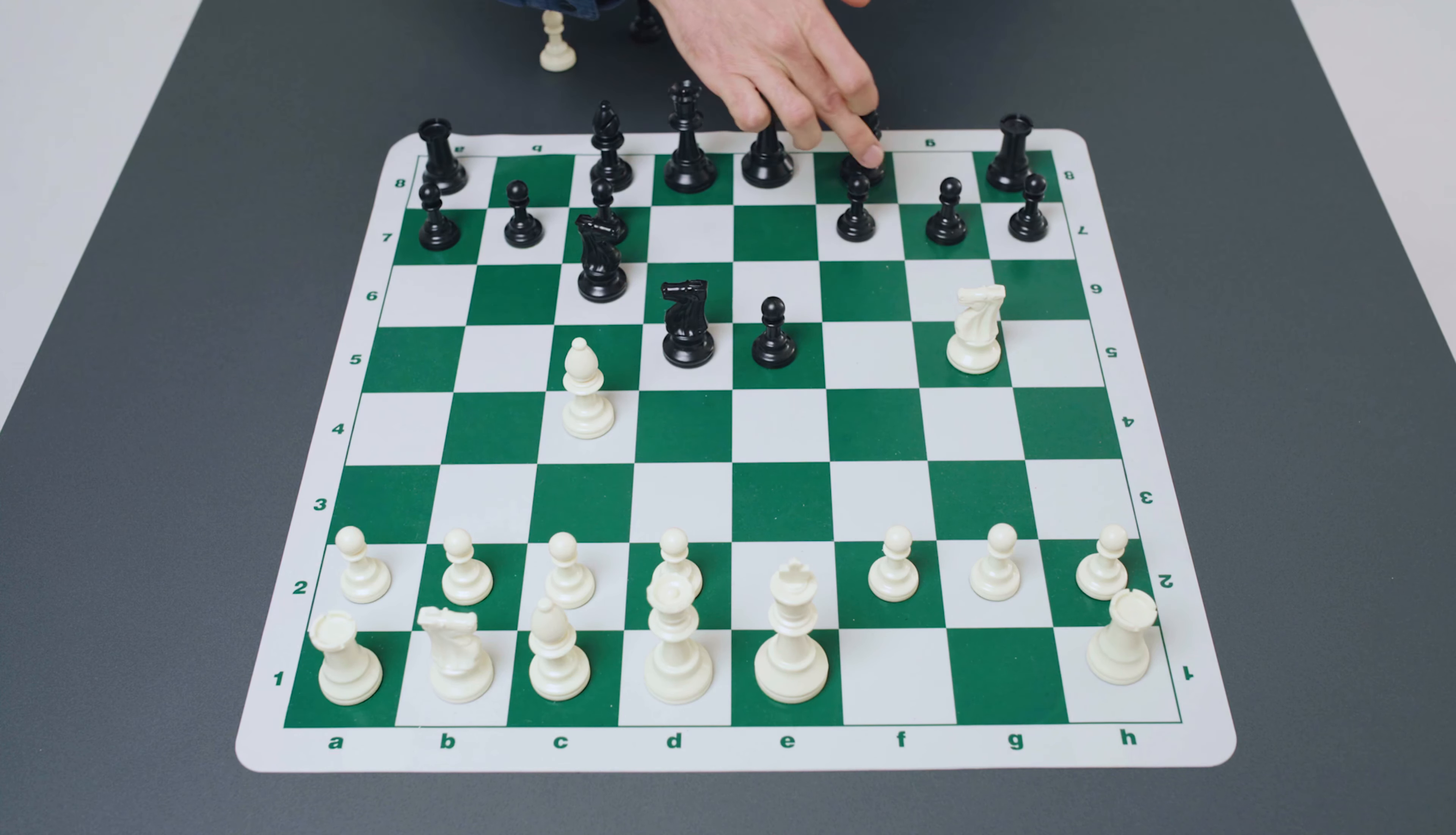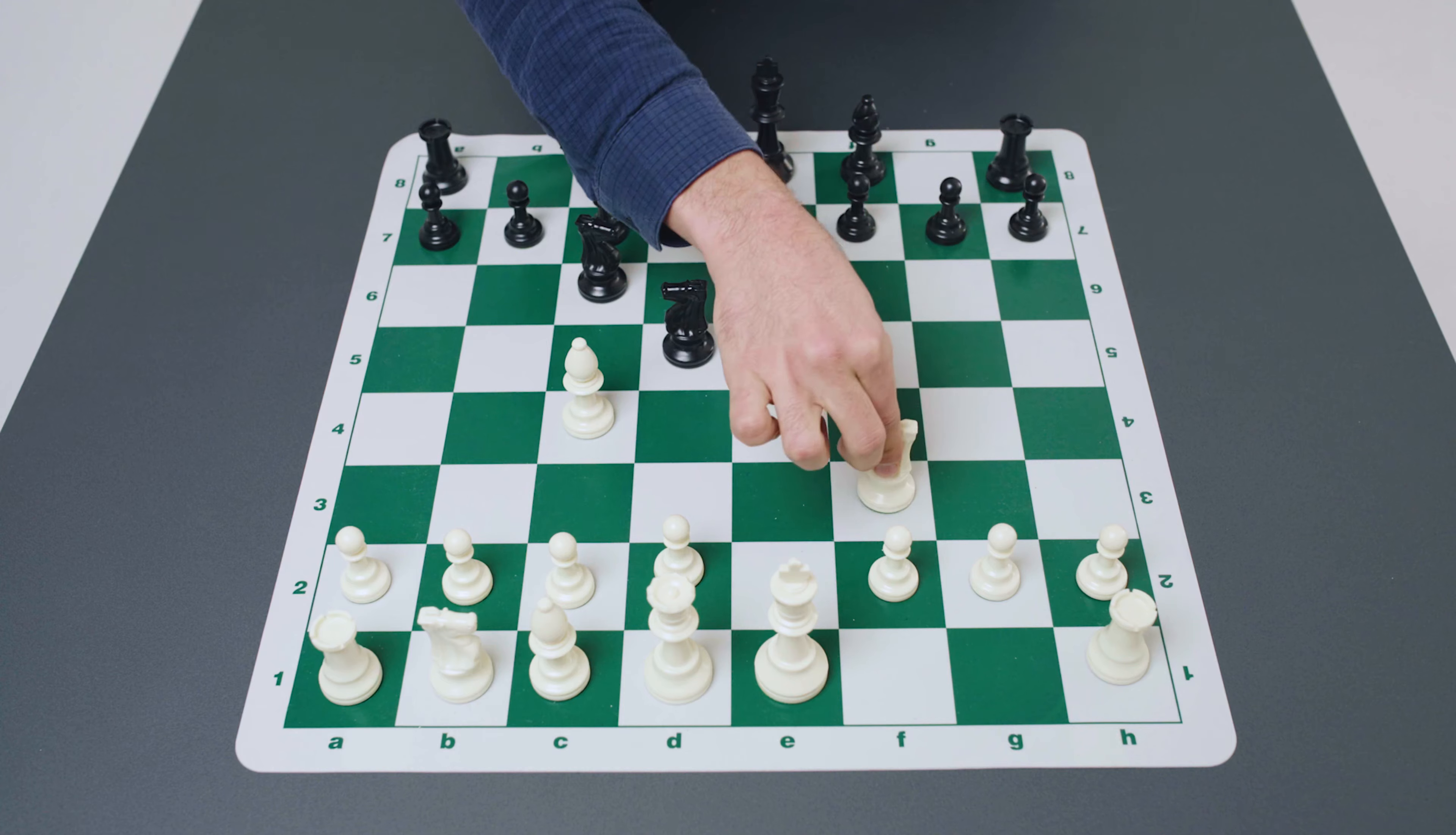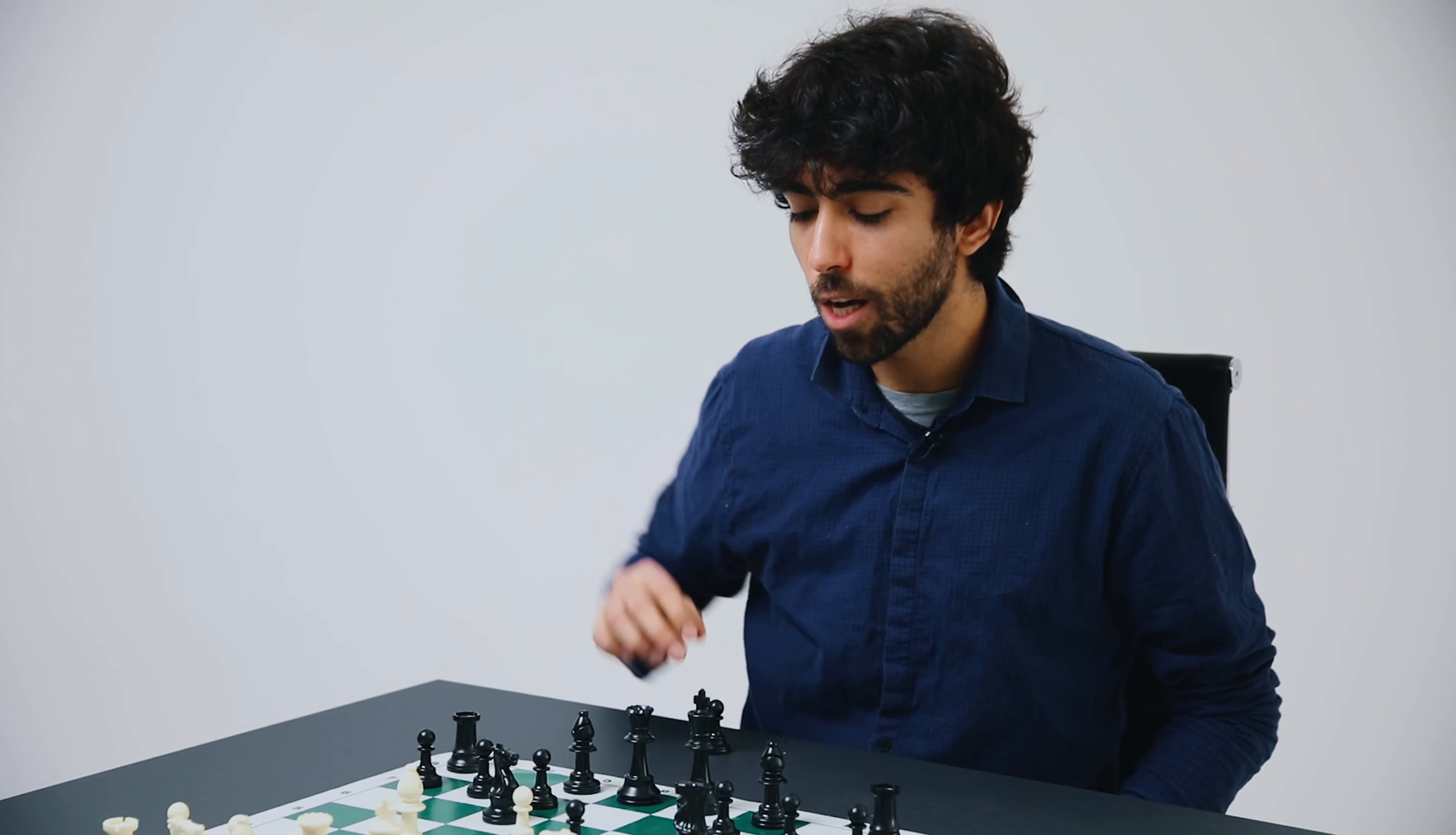Let's take a look at what can happen after the other popular choice which is knight to f6, the two knights defense. This move has the advantage of immediately attacking the pawn on e4. However it does have a major potential disadvantage which is that the g5 square is now available to white's knight.